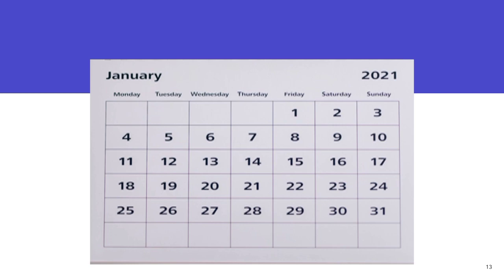Now let us look at a woman whose menstrual cycle is 21 days. If you subtract 14 from 21, what you get is 7. It means that on the 7th day of her menstrual cycle, she is going to ovulate.